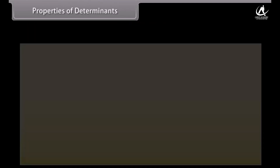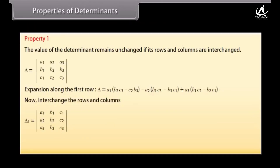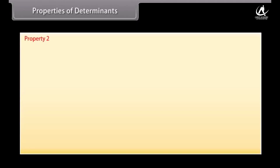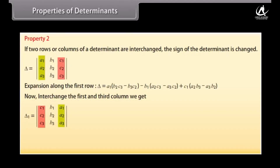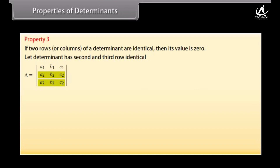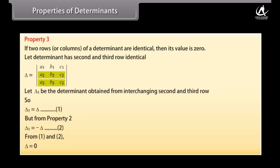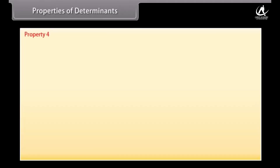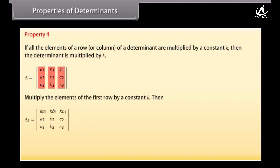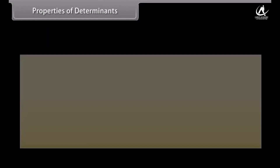Properties of Determinants. Property 1: The value of the determinant remains unchanged if its rows and columns are interchanged. Property 2: If two rows or columns of a determinant are interchanged, the sign of the determinant is changed. Property 3: If two rows or columns of a determinant are identical, then its value is 0. Property 4: If all elements of a row or column are multiplied by a constant k, then the determinant is multiplied by k.